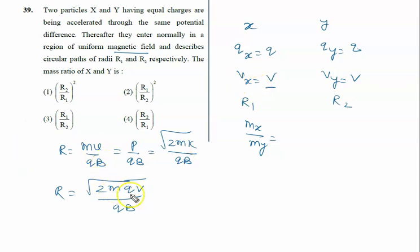same charge, so q is constant. Same voltage V is constant. The constant 2 is constant, and the magnetic field is also the same, so that is also constant. Therefore, we get that r is proportional to root m.